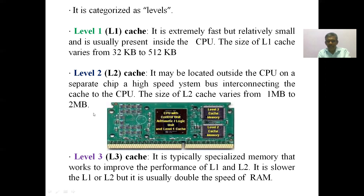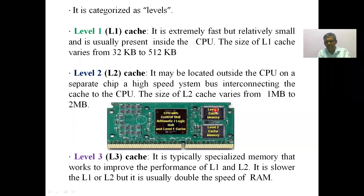You can observe the diagram here — the large-sized microprocessor on the motherboard is the CPU. The ICs shown around it are semiconductor devices — those are Level 2 cache memories, located outside the CPU. So from the diagram, you can clearly see that these Level 2 caches are outside the CPU.